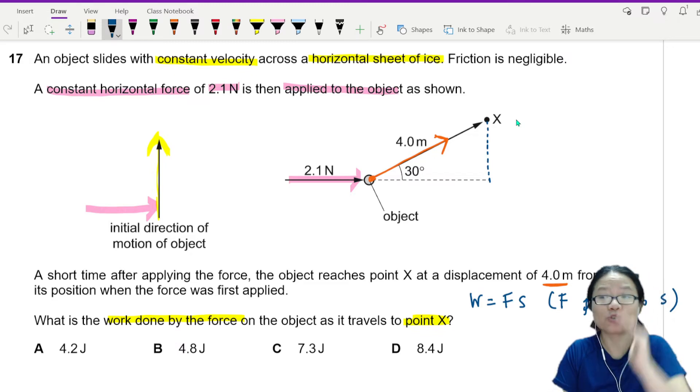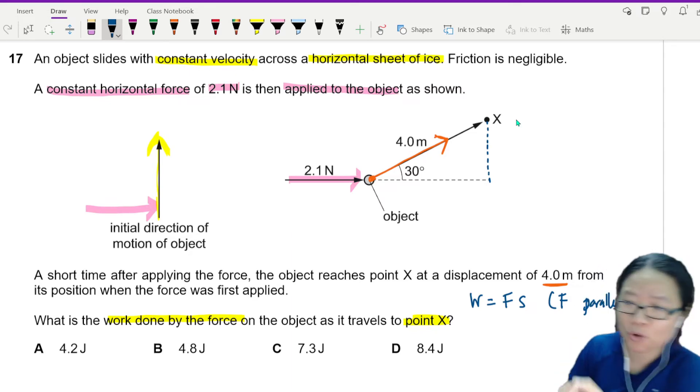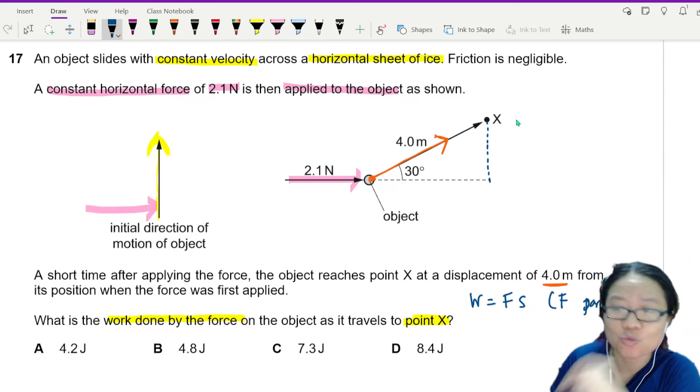The object also happens to move upwards because it was already moving upwards. But what is relevant to the 2.1 newton is I want you to move to the right. To the right, to the right.